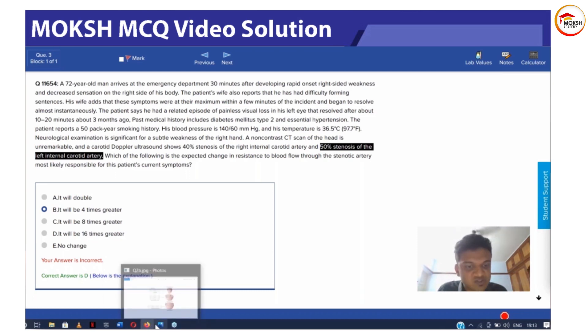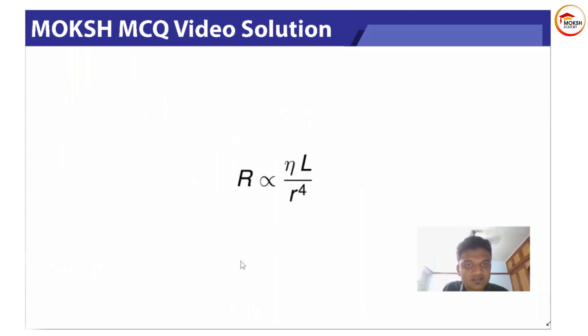This was a really easy question guys, you should just know this formula. This is Poiseuille's law which you all might have learned in fluid dynamics, which was a chapter in physics of 11th or 12th class. Resistance is equal to 8ηL upon πr^4, or directly proportional to 1/r^4. We have 50 percent stenosis.